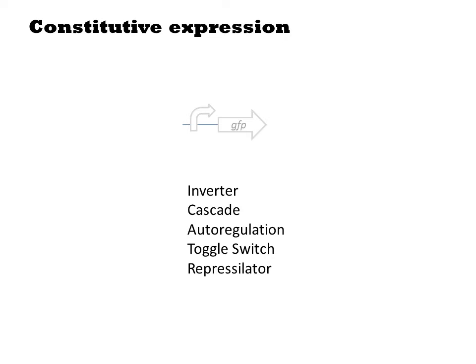I designate that promoter here as a grayed-out arrow symbol. Similarly, in each case, there will be an output reporter, which I'll describe by a grayed-out GFP gene. So the simplest genetic circuit is the one that we've been discussing, a simple inducible promoter driving GFP.